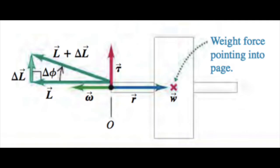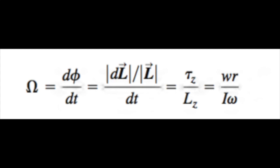The gyroscope has angular momentum L. A short time interval dt later, the angular momentum is L + ΔL, and the infinitesimal change ΔL = T·dt is perpendicular to L. This means the flywheel axis has turned through a small angle dφ given by the ratio of ΔL and L. The rate at which the axis moves is called the precession angular speed, denoted by capital Omega (Ω).